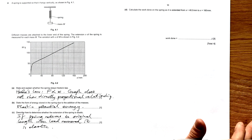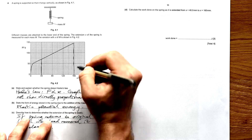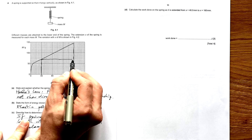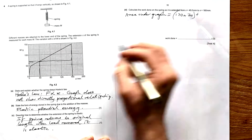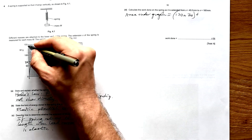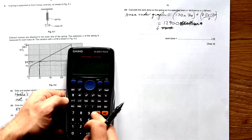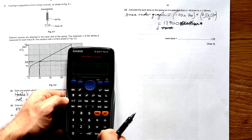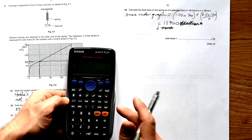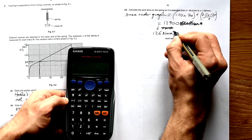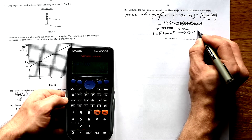Calculate the work done on the spring as it is extended from 40 mm to 160 mm. We find the area under the graph — split into a rectangle and a triangle. The rectangle: 120 times 70, and the triangle: 75 times 120 divided by 2. Since the masses are in grams, divide by 1000 to get kilograms, then multiply by 9.8 for force. That gives 126 Newton millimetres, and dividing by 1000 to convert to Newton metres gives 0.126 joules.